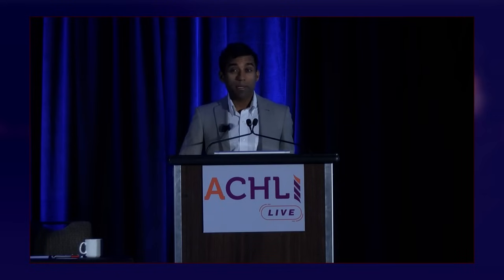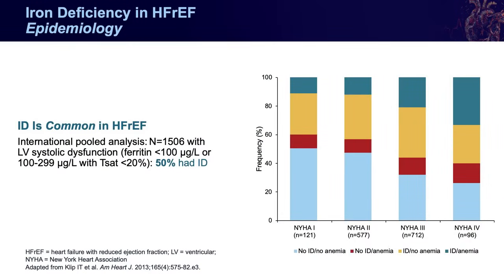Iron deficiency at the epidemiological scale is very common in heart failure. In this international pooled analysis, about 50% of people had biochemical evidence of iron deficiency. Importantly, the burden increases with severity of illness. Using the New York Heart Association classification, as severity increases to NYHA class 3 and 4 — where patients have symptoms at rest or with minimal exertion — the burden of iron deficiency approaches 75 to 80 percent.